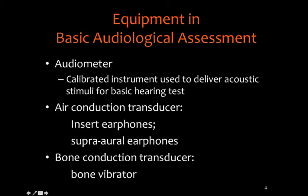Reviewing the basic equipment used in audiologic assessment: there's an audiometer, which is a precision calibrated device that delivers the acoustic stimulus for the basic hearing test. Essentially what we're doing with an audiometer is delivering individual test frequencies in hertz and measuring those in decibels. We're looking at different frequencies and adjusting the decibel value to determine what the threshold value would be.